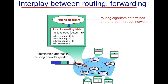Now what is forwarding? Forwarding is the physical process of moving a packet from a node's input interface to a node's output interface. So let's look at this particular node for which the routing algorithm and the local forwarding table have been magnified.